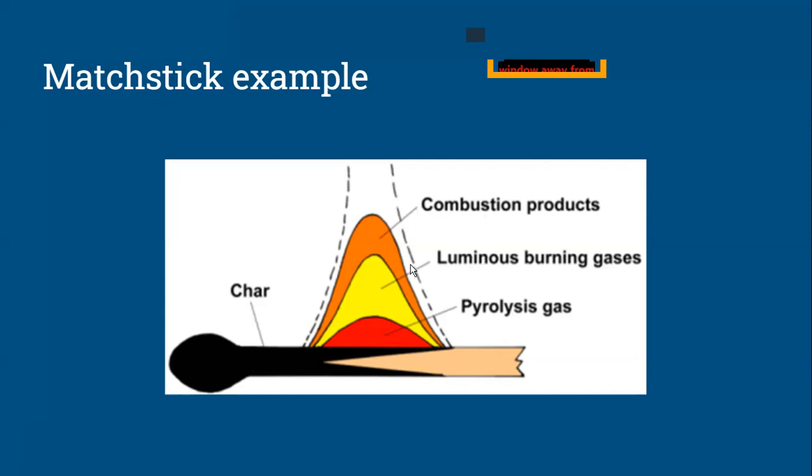So, those actually ignite and combust to produce a visible flame. They call it luminous burning gases. That's basically the flame zone. And then, you have combustion products. So, the reactions, most of the reactions occur during this flame zone, and then you're left over with CO2 or particulate matter, water vapor, other things.